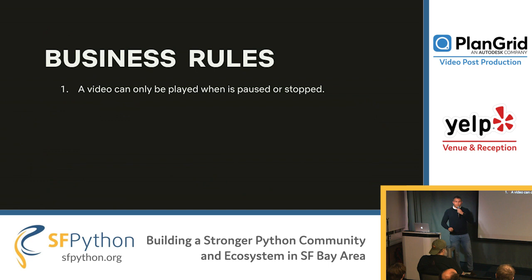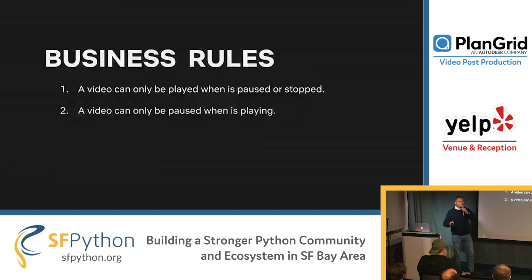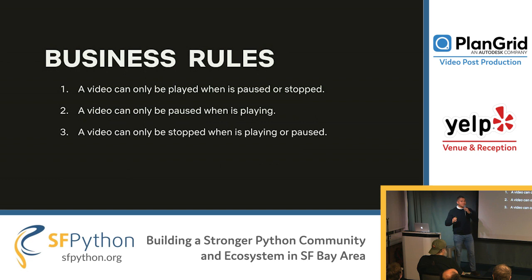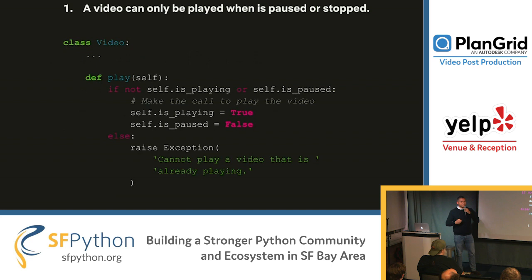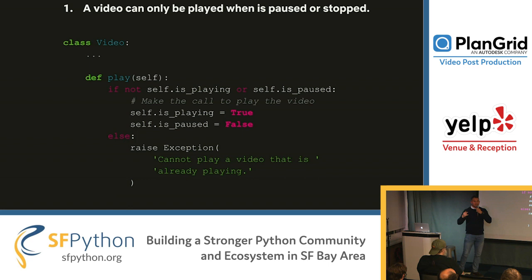Let's talk about some business rules. A video can only be played when it's paused or stopped. A video can only be paused when it's playing. And a video can only be stopped when it's playing or paused. Very simple rules, just like a regular video player. So now we modify our source code and implement these rules. For the play function, we check if the video is not playing or if the video is paused — in that case, we make the call to play the video and update the is_playing and is_paused attributes. If this condition is not satisfied, we raise an exception saying you cannot play a video that is already playing.